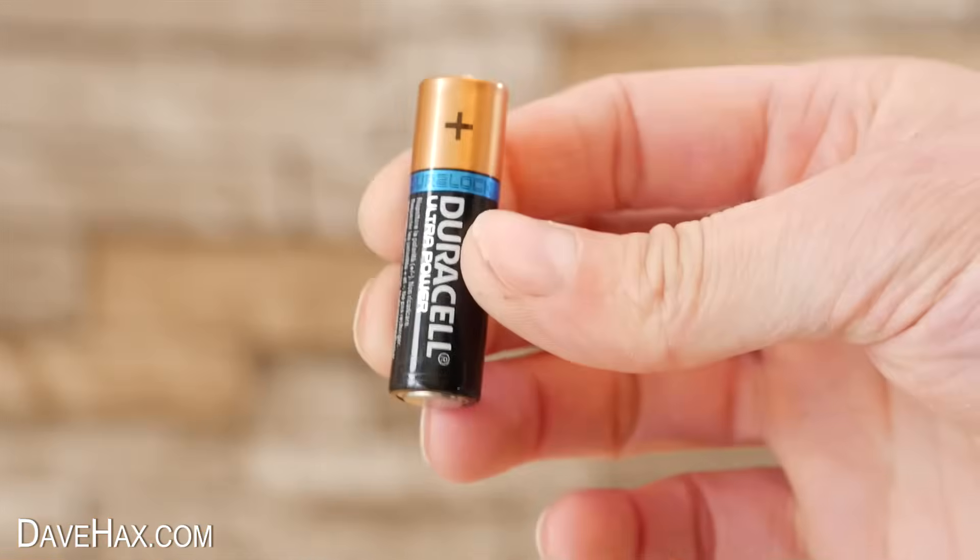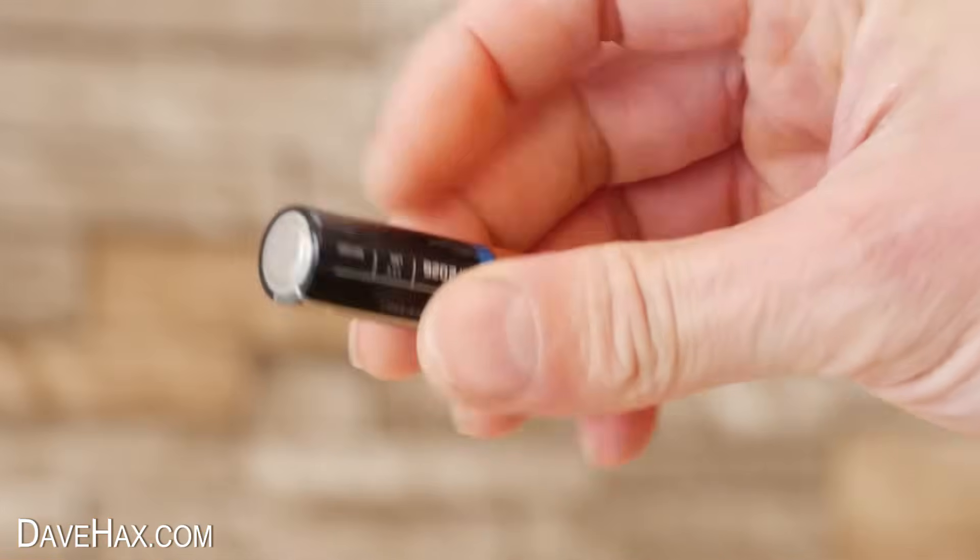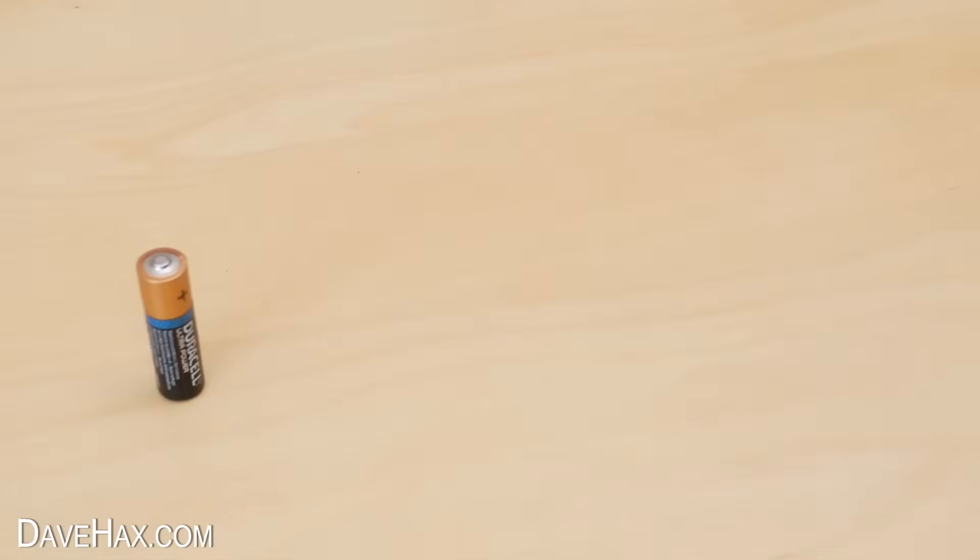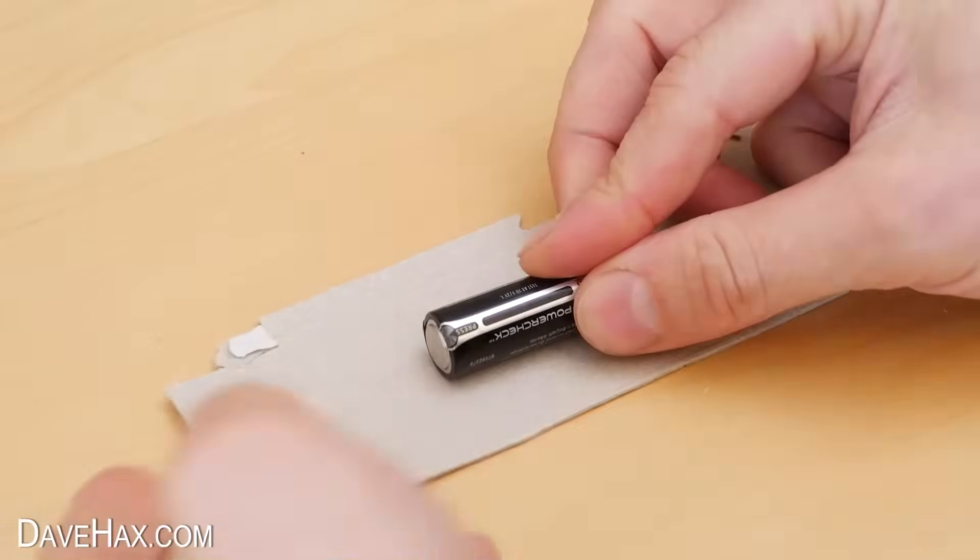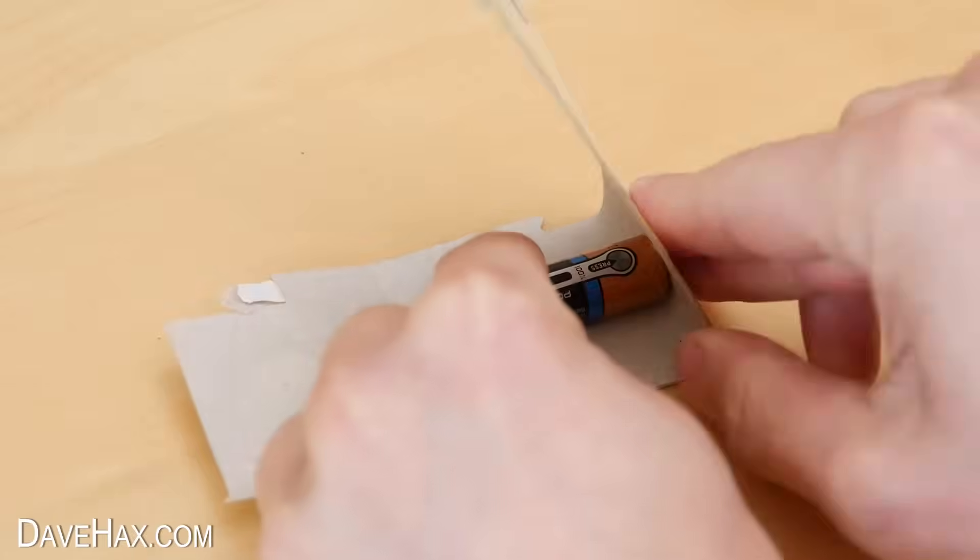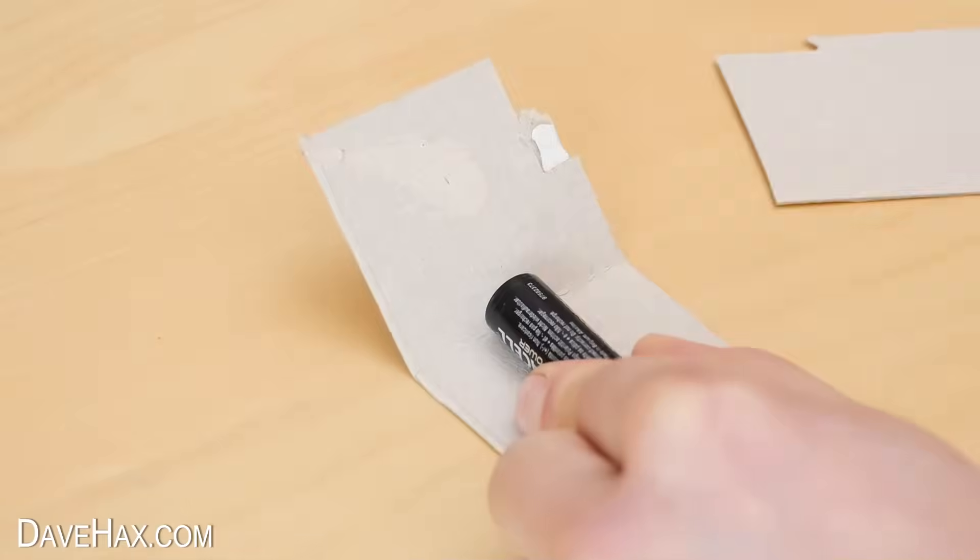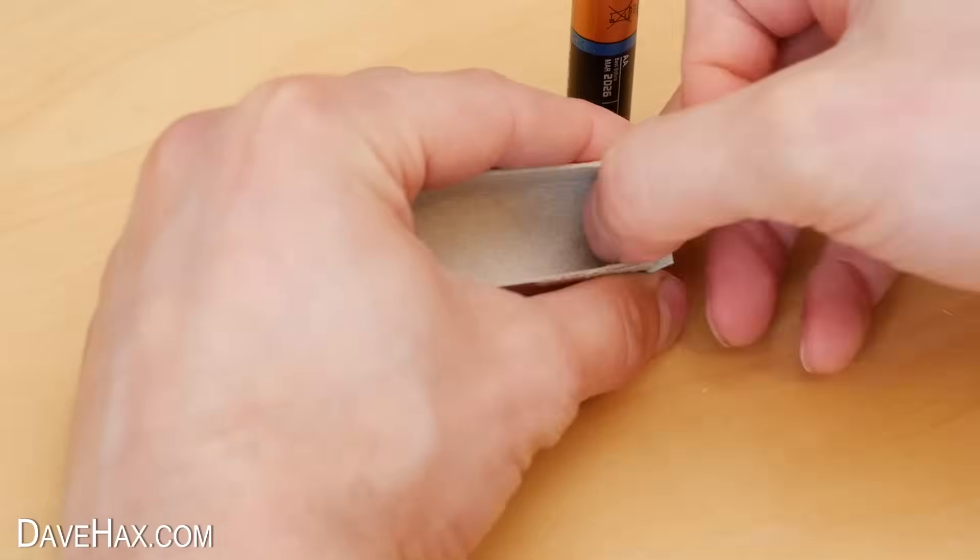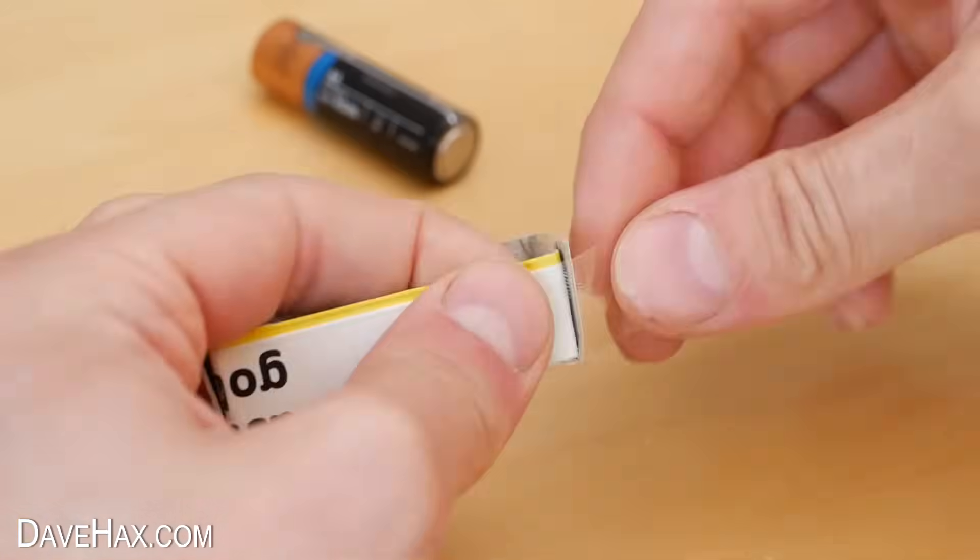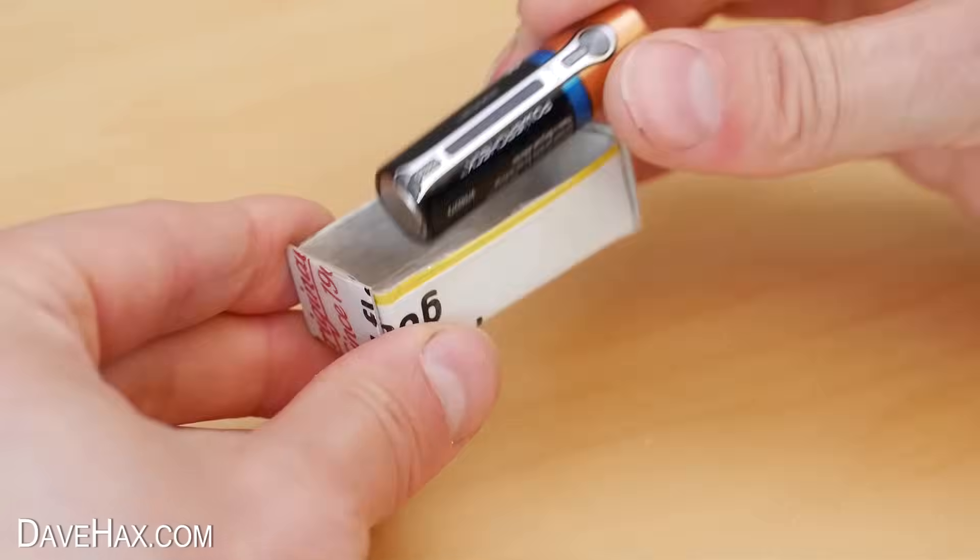The first thing I'm going to do is make a battery holder for this AA battery. I'm using a strip of cardboard from the cereal packet, placing the battery on and shaping the cardboard into a tray like this. Use some strips of tape to hold it together and that's our battery holder.